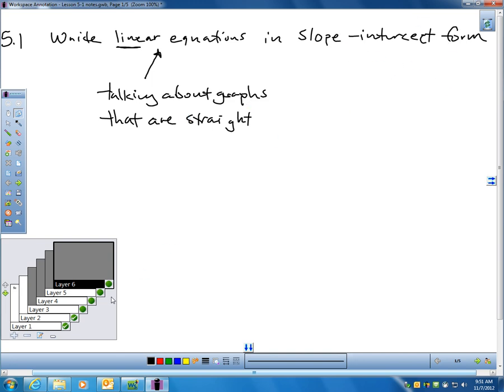And remember, slope-intercept form from chapter 4 is equations that have the following form, basically. Y equals MX plus B.